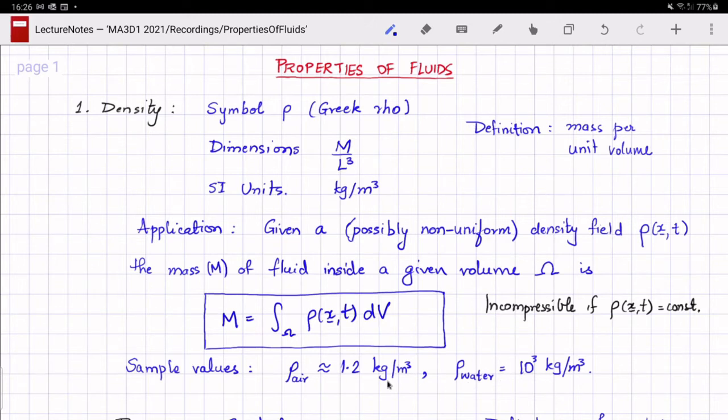Water and air can be considered to be incompressible in most situations, but for certain high-speed flows, for example aircrafts flying through air, air should be considered as compressible. Water in most circumstances is incompressible, except if you are considering phenomena like propagation of sound, which is by definition a compressible phenomenon.